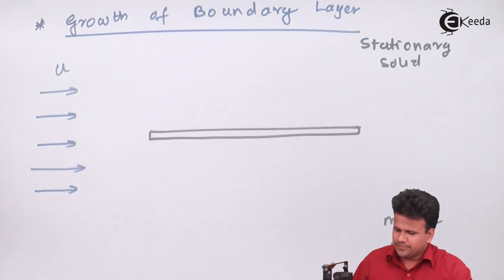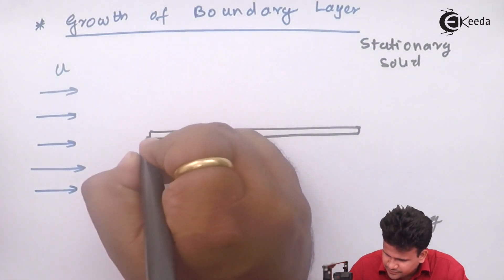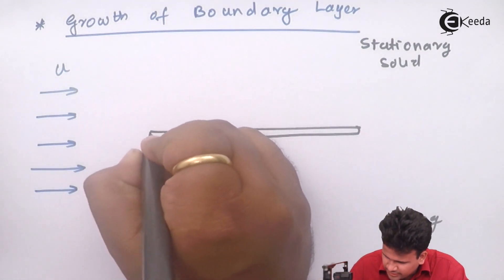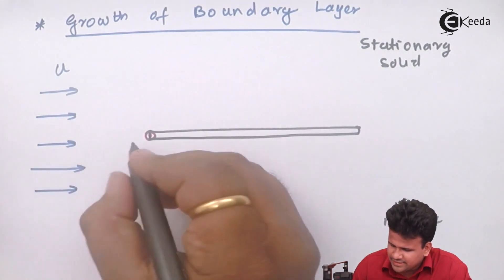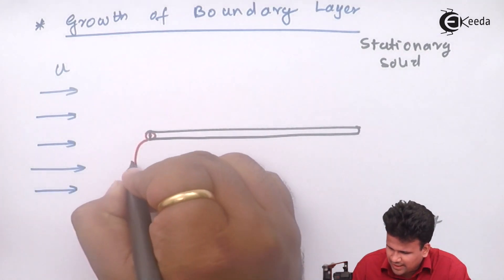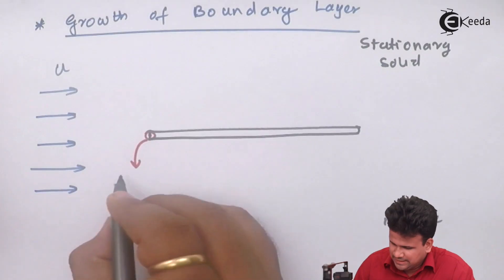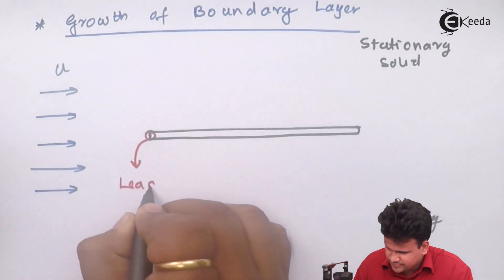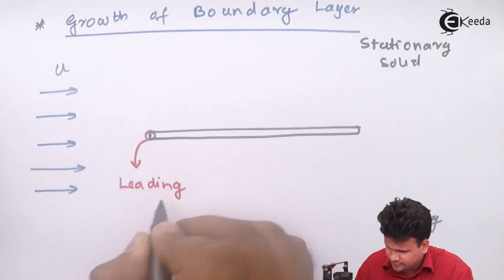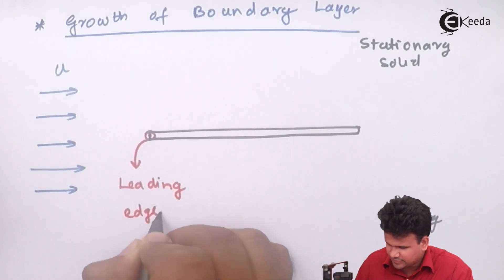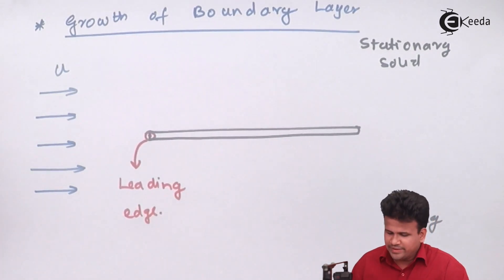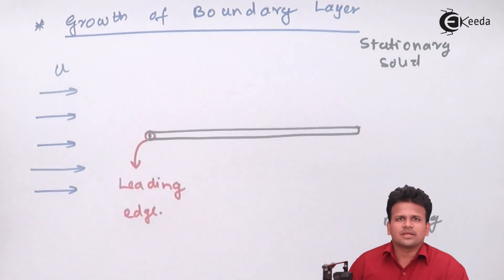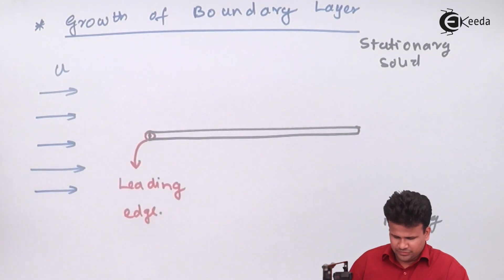We consider this starting point of the entire plate. This point is called the leading edge. The leading edge is the point from where the entire boundary layer will start to grow.